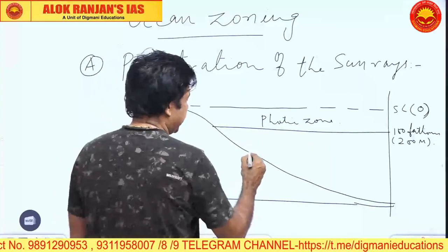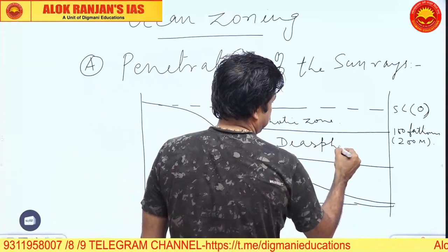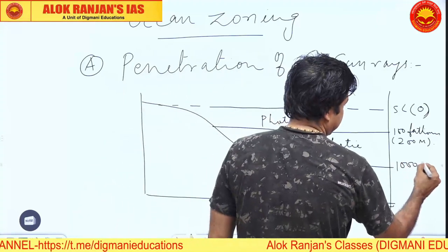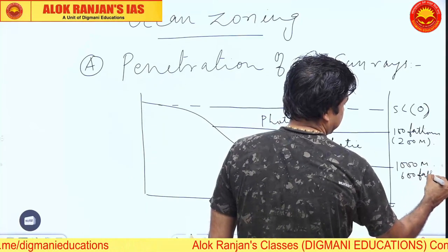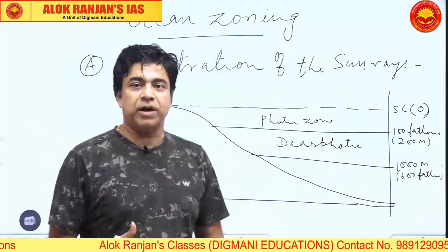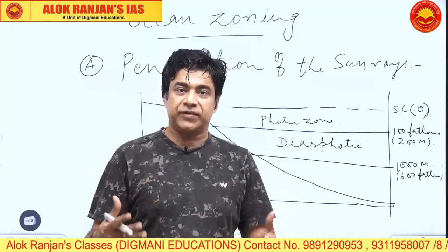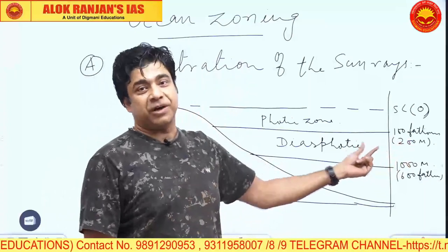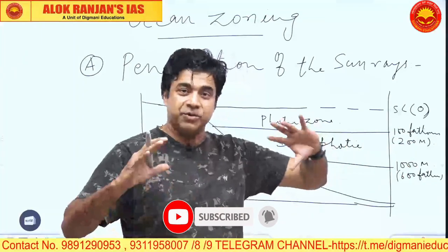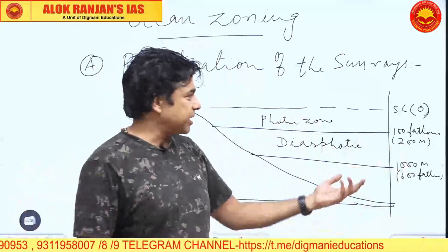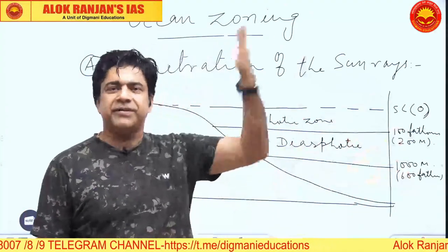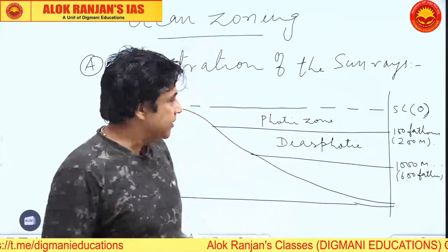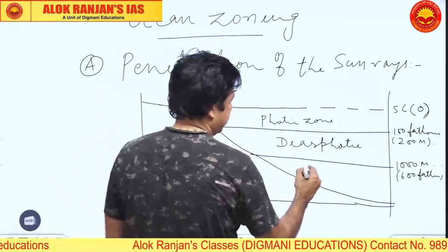The second zone is called the diasphotic zone, which has diffused lights. It extends up to 1,000 meters or 600 fathoms. One fathom equals six feet or 1.83 meters. Note that 100 fathoms and 200 meters are not exactly equal — 100 fathoms is about 183 meters — but both are used as criteria. Fathoms are used in British and European measurements, while the United States and we follow the meter criteria.